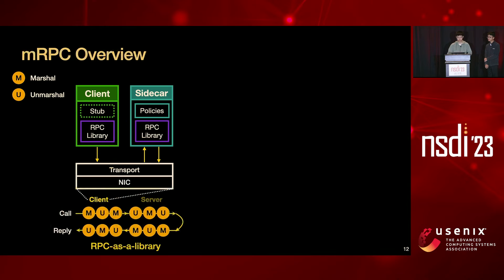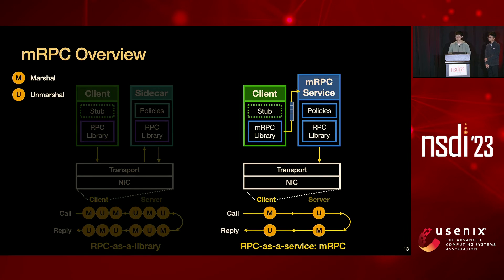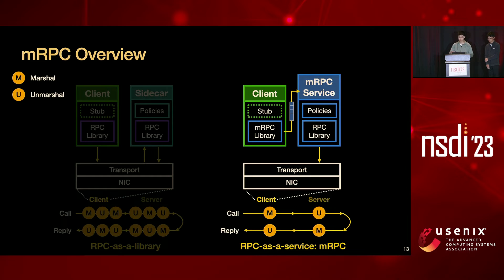Therefore, we argue for an alternative architecture in which RPC is provided as a managed service. In RPC as a service, we first have an MRPC library linked with an application. But unlike traditional RPC libraries, we decouple a set of RPC logics such as marshaling, unmarshaling, and transport interface from the MRPC shim library. The MRPC shim library connects to an MRPC system service through a shared memory queue. This single MRPC service is persistent on the system and shared across all MRPC applications. Inside this MRPC service, we perform marshaling only after RPC policy processing, removing redundant marshaling steps to achieve manageability with the same performance as a normal RPC library.